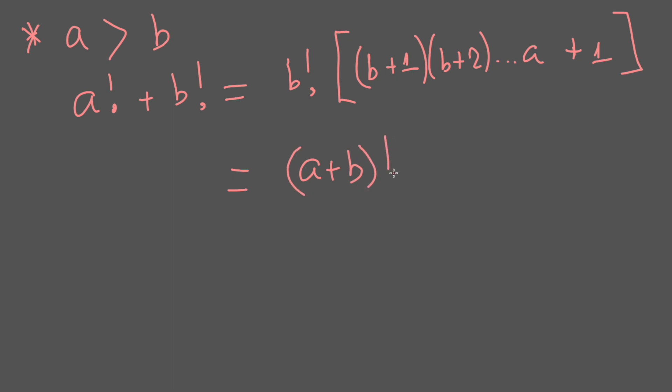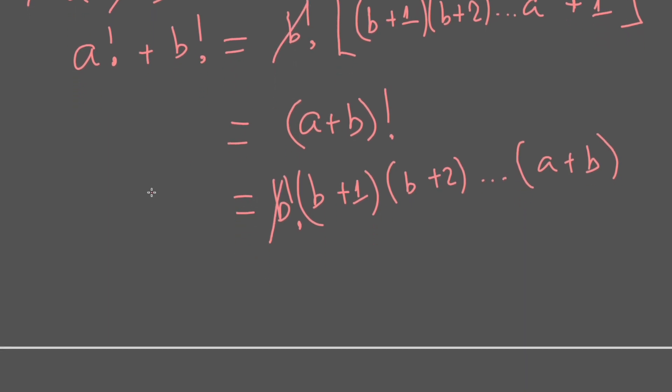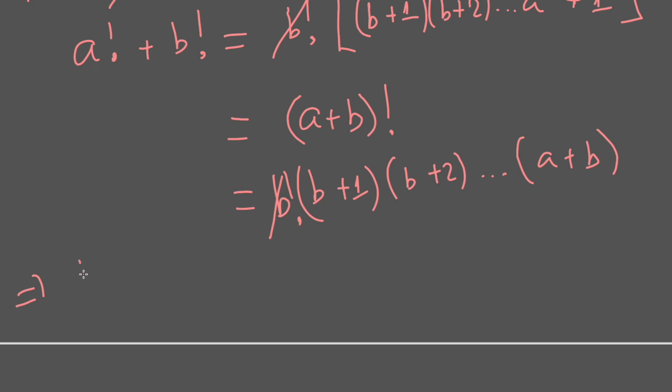The factorial of (a+b) equals (b+1)! times (b+2)···(a+b). So we will simplify the factorial of b on both sides. Then we will have (b+1)(b+2)···(a+1) equals (b+1)(b+2)···(a+b).